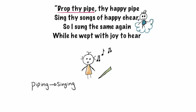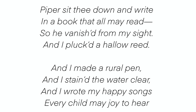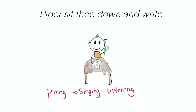The next three stanzas say: 'Drop thy pipe, thy happy pipe, sing thy songs of happy cheer. So I sang the same again, while he wept with joy to hear. Piper, sit thee down and write in a book that all may read. So he vanished from my sight and I plucked a hollow reed. And I made a rural pen, and I stained the water clear, and I wrote my happy songs every child may joy to hear.'